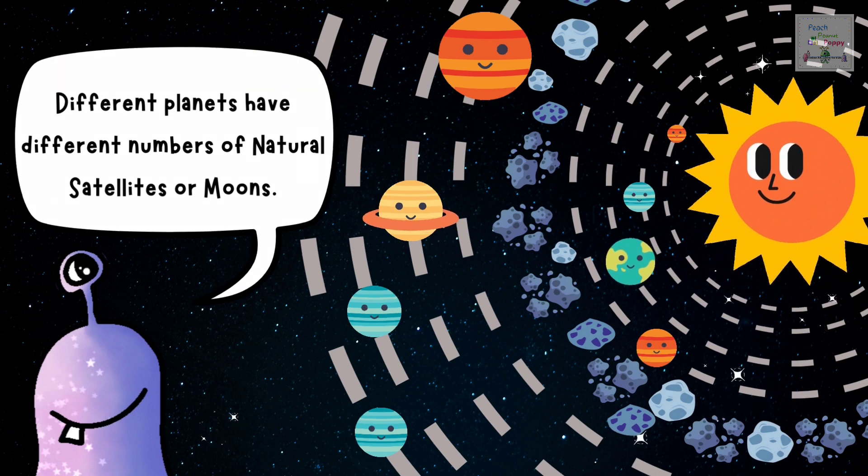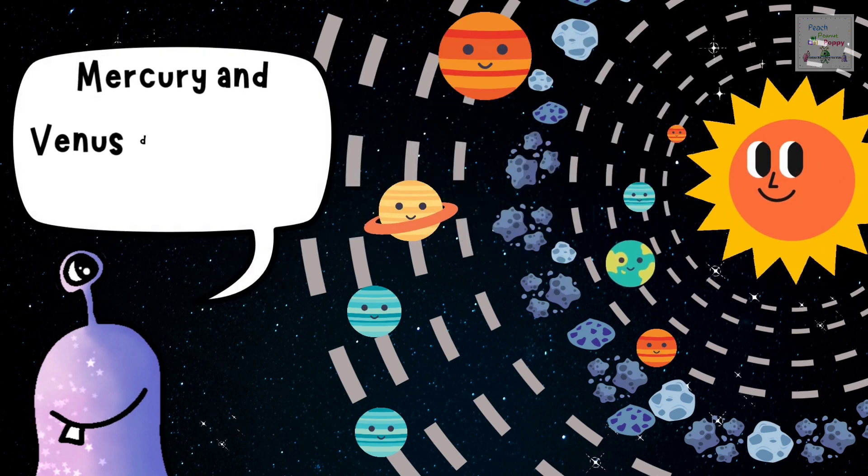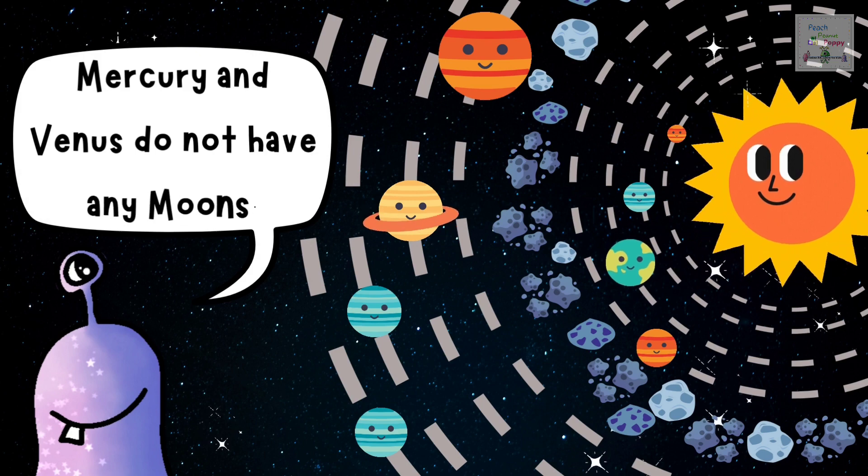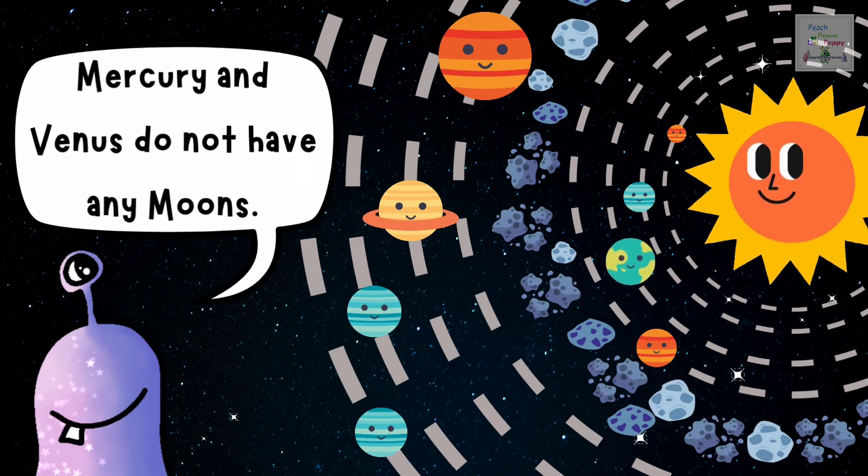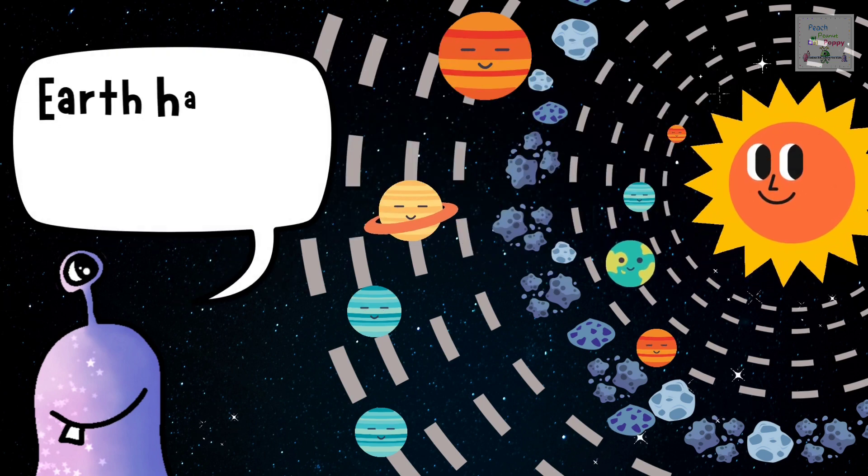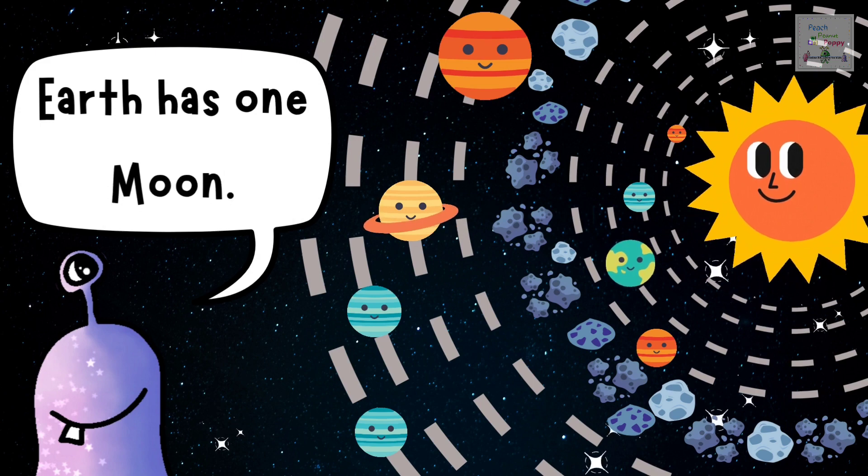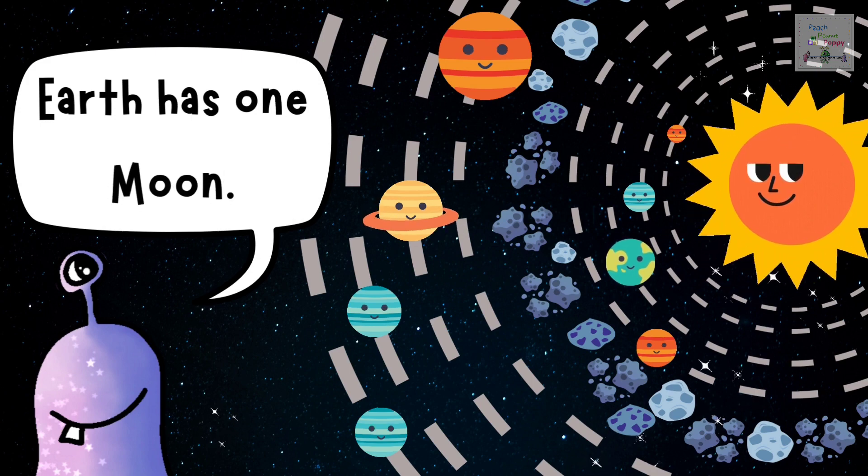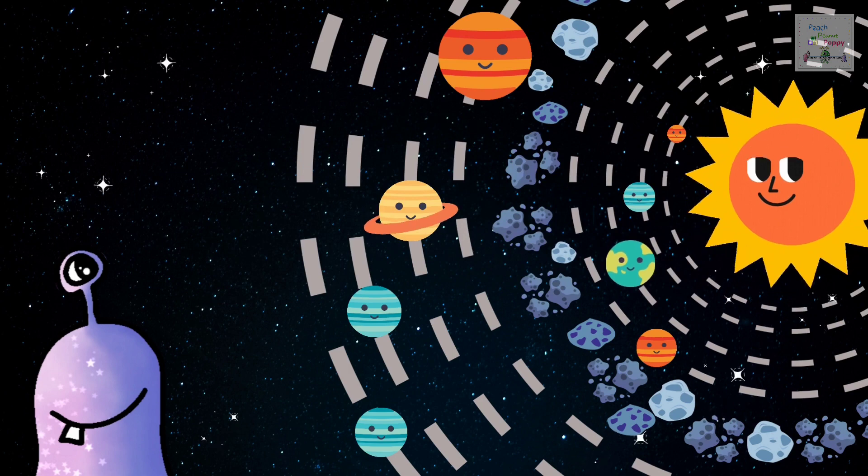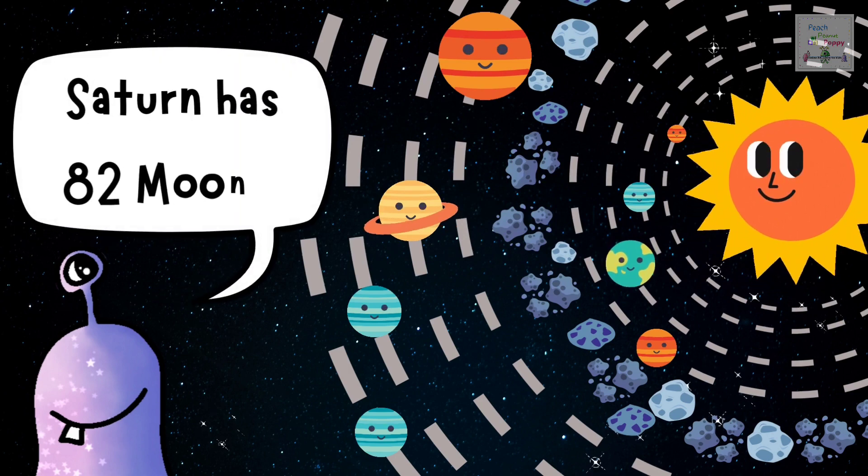For example, Mercury and Venus do not have any moons. Whereas Earth has only one moon. And believe it or not, Saturn has 82 moons.